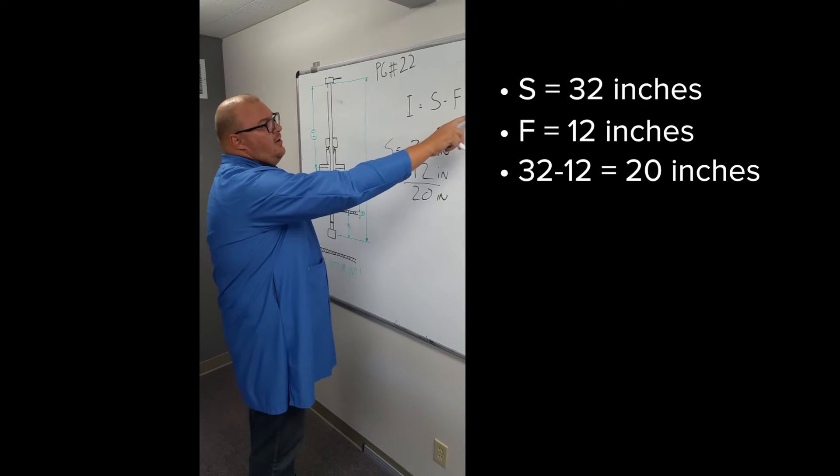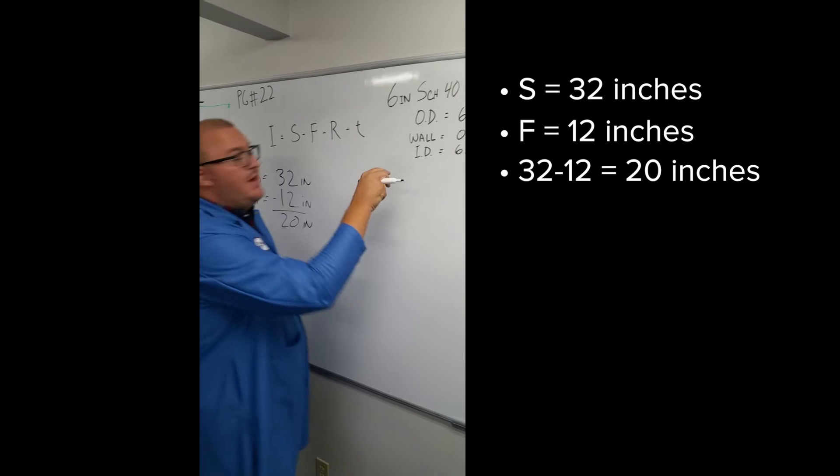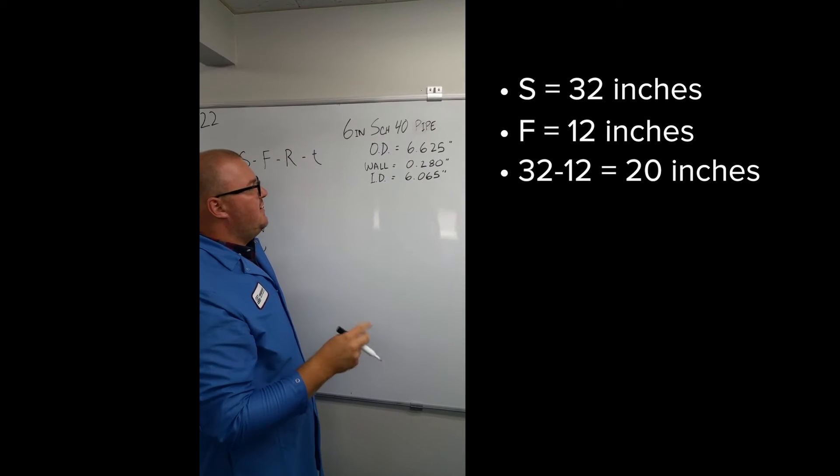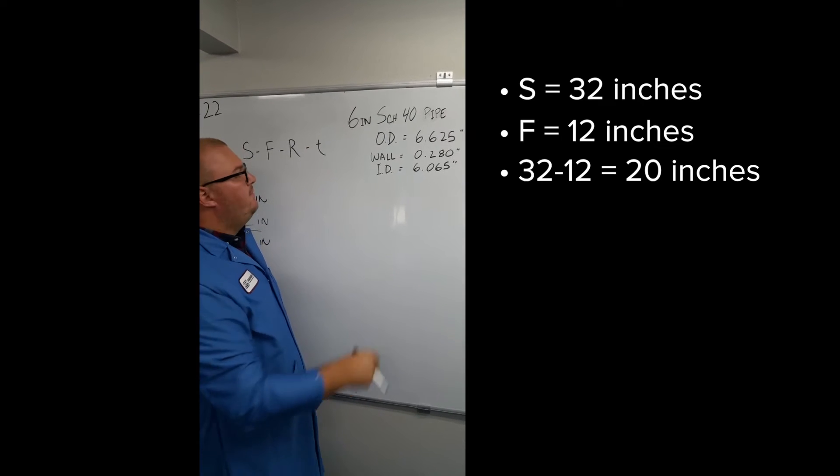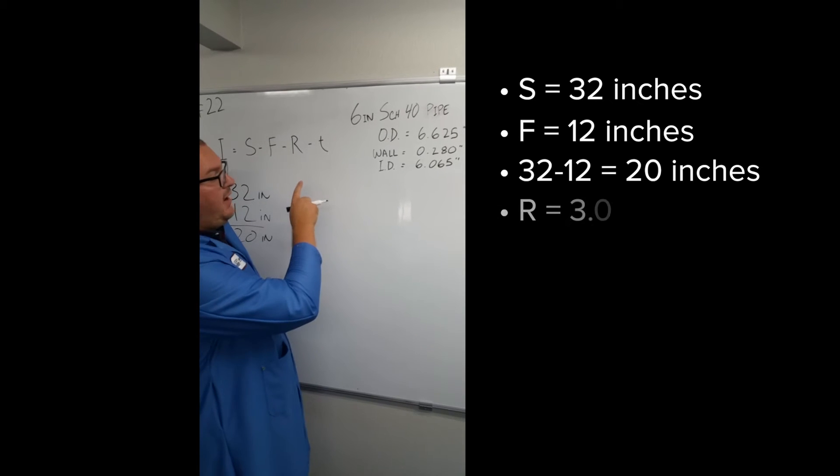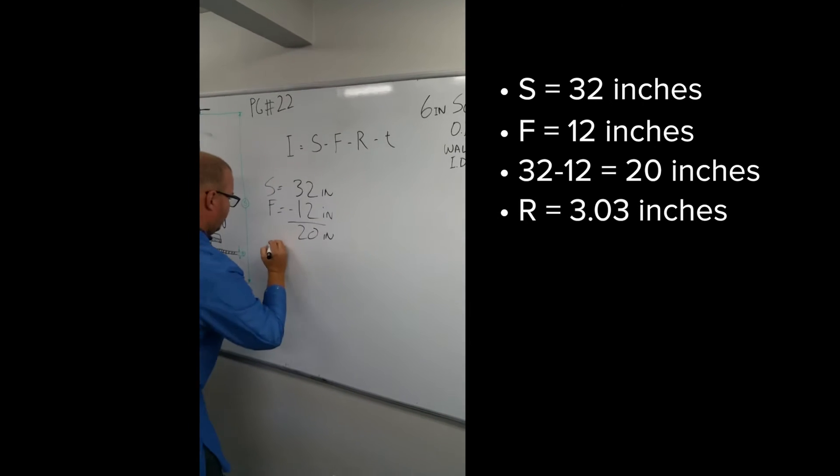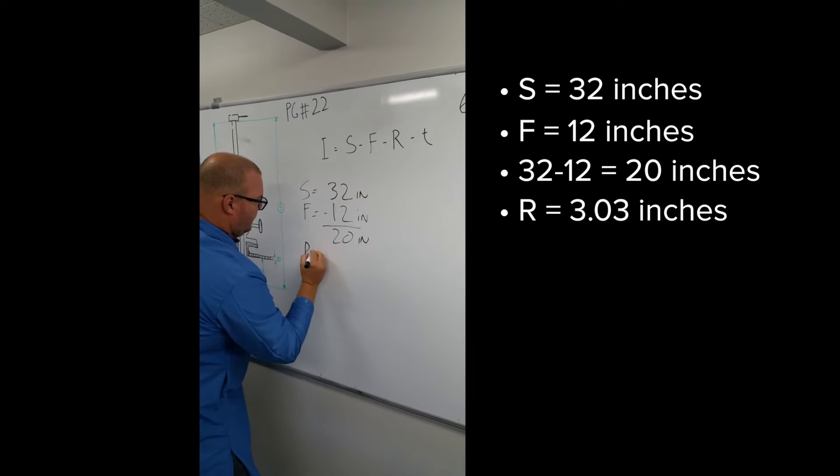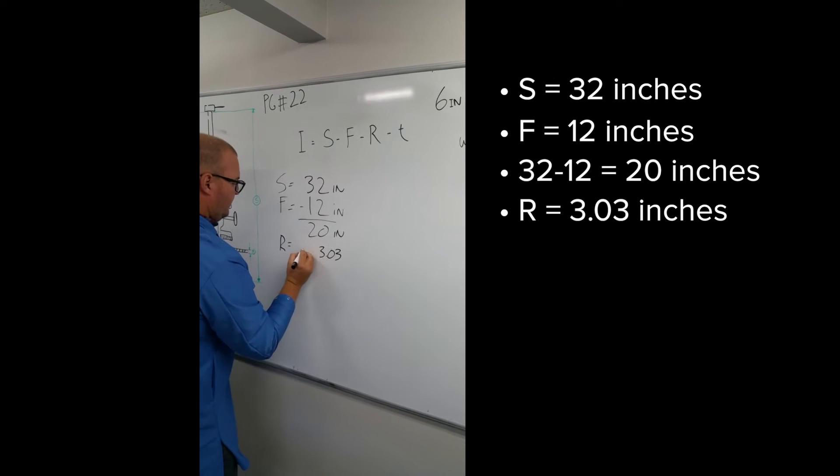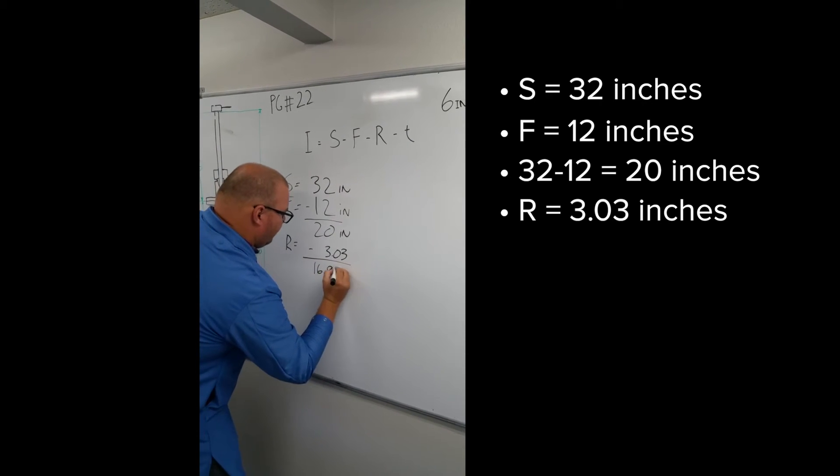Next is R which is the radius of the pipe. Over here I have some information about our pipe downstairs. 6 inch schedule 40 pipe. I just took this off a standard pipe schedule table. The OD, the wall thickness, and the ID. R is the radius of the pipe. All we need to do is take the ID and divide it by 2. Our radius is equal to 3.03 inches. Subtract that and we get 16.97 inches.